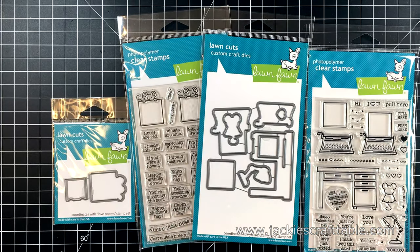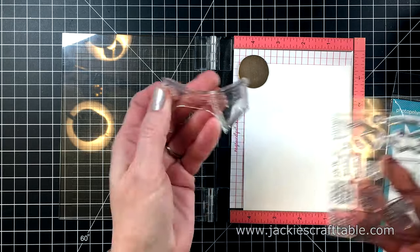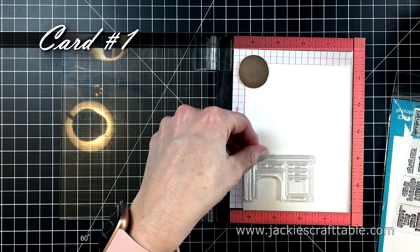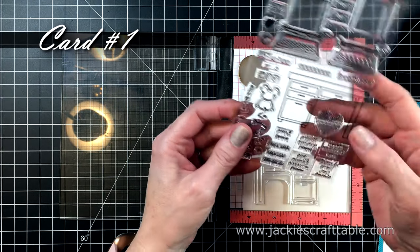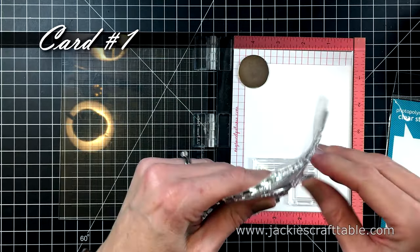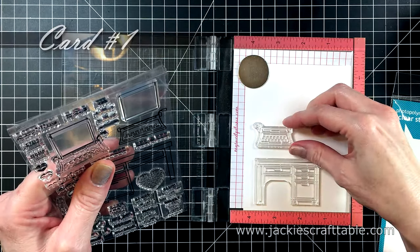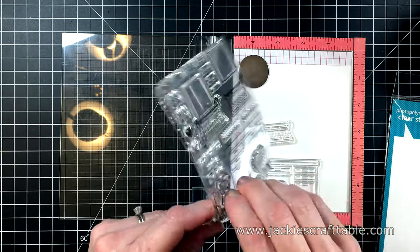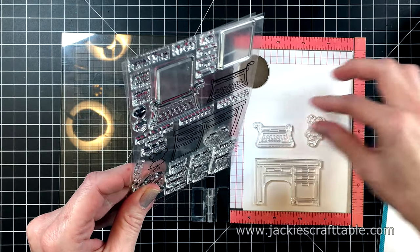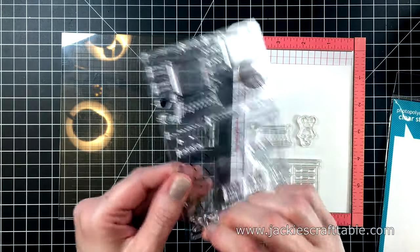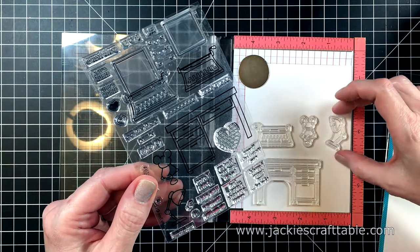I'm going to use the You're Just My Type stamp set first. I pulled out my mini MISTI so that I can stamp up a bunch of images at the same time. I have to use this cute little desk and the typewriter, and I'm also going to stamp out the mouse and the lamp. I'm arranging them on a piece of Neenah Solar White 80-pound cardstock.